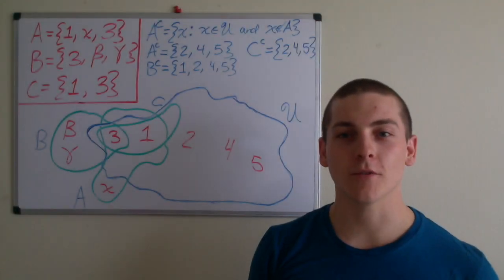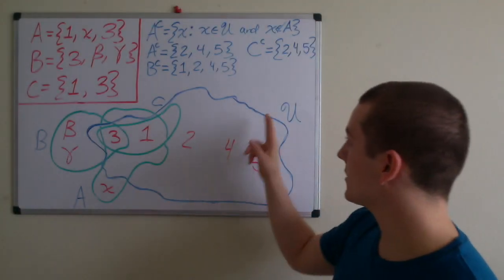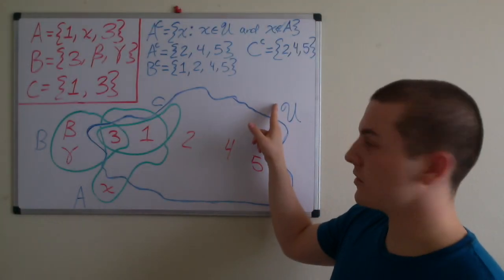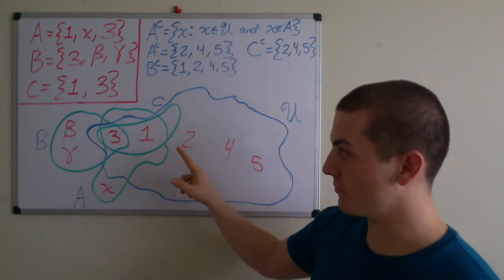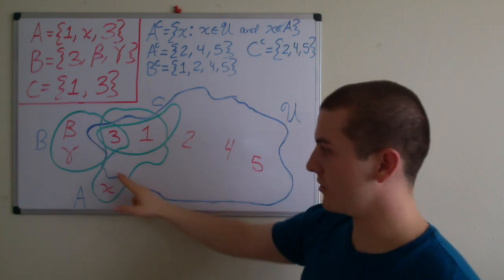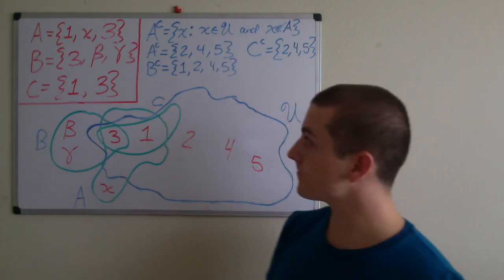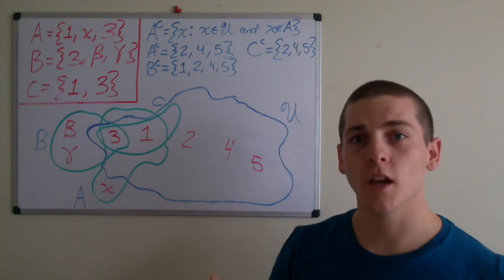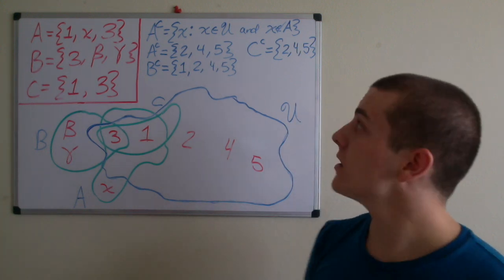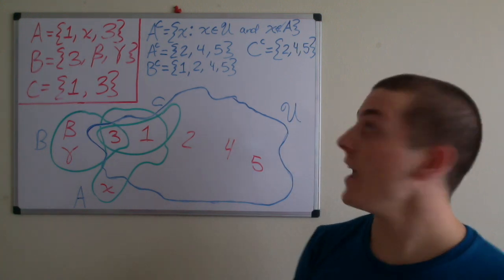In this video I'll be going over examples of complements. I've defined the universe to be the integers one through five and it's denoted graphically by this blue line. If we recall the definition of the complements with regards to A,